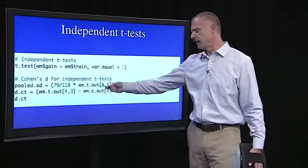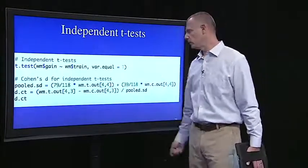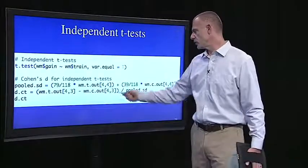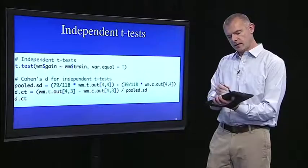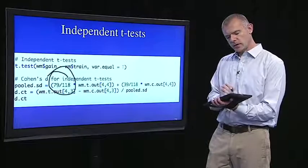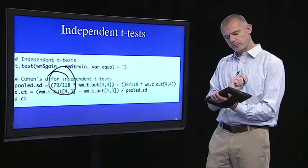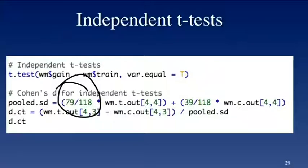So what I did in this first line of code was I got a pooled standard deviation. Again, I'm accessing the describe output table to get the standard deviation for the training group. And I have to weight that a little more because there are more people in the training group. So that's the degrees of freedom for the training group over the total degrees of freedom for this t-test. And here, that's the degrees of freedom for the control group over the total degrees of freedom for this t-test.